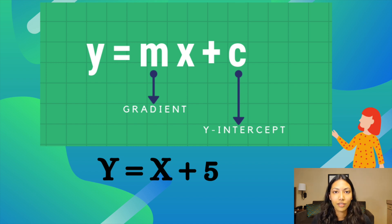So we can test this. For example, let's say we are looking for a salary of an employee who has five years of experience. We would put x equals five. So we would get y equals 10, which is equivalent to $100,000, which is exactly what we were expecting.